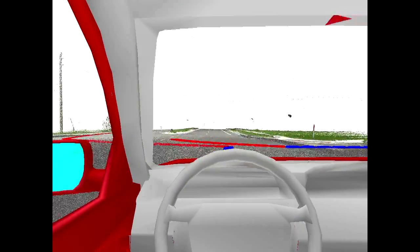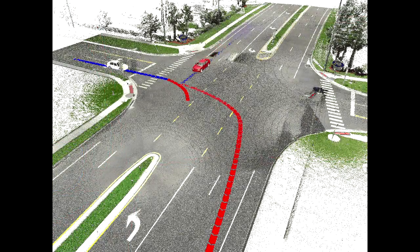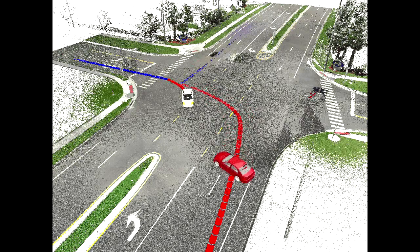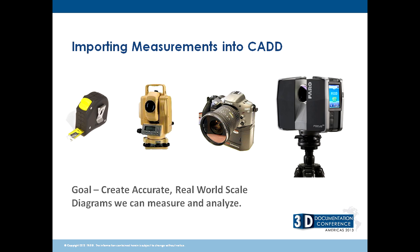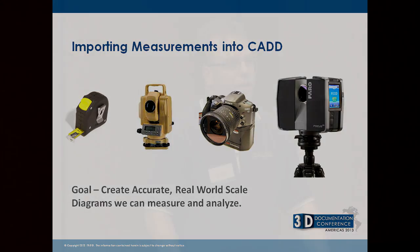We can animate that data and include the point cloud data in it to get a nice, complete scene. This intersection was a big Florida intersection that was shot a couple of years ago. Regarding importing measurements into CAD, our goal is to create accurate real-world scale diagrams we can measure and analyze. Over the years the methods have included tape measures, baseline and triangulation, total station cameras using photogrammetry-style programs, and now laser scanners. All these methods are still valid — you might still use a laser scanner and need to take a couple of measurements with a tape measure or combine total station data.